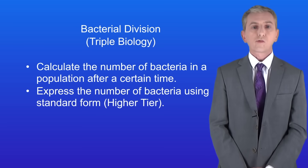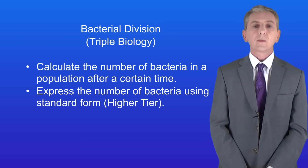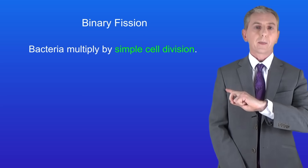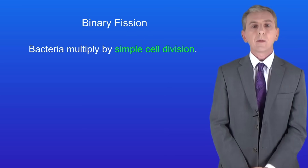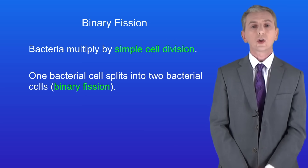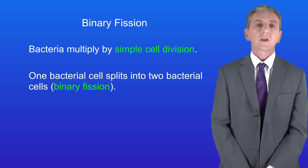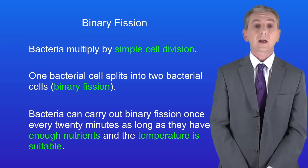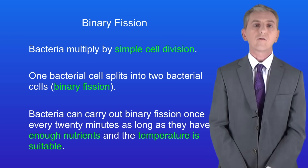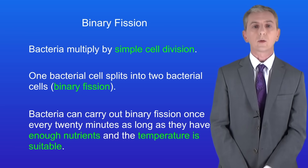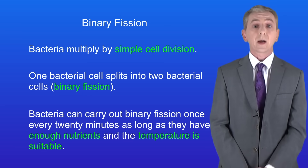Remember that bacteria are prokaryotes — their genetic information is not enclosed in a nucleus. Bacteria multiply by simple cell division: one bacterial cell splits into two bacterial cells. Scientists call this process binary fission. Bacteria can carry out binary fission once every 20 minutes, as long as they have enough nutrients and a suitable temperature. This means that bacterial numbers can increase very rapidly indeed.